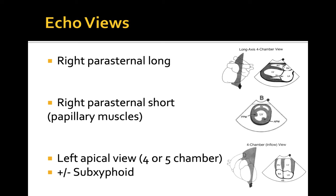The majority of standard echocardiographic views can be used in the RUSH assessment. Mastering the acquisition of all of these views will provide you with the most powerful tools to assess the pump portion of the exam. However, a limited examination using only some of these views may still be helpful. Imaging of the heart usually involves four classical views: the right parasternal long and short axis at the level of papillary muscles, the subxiphoid view, and the left apical view.